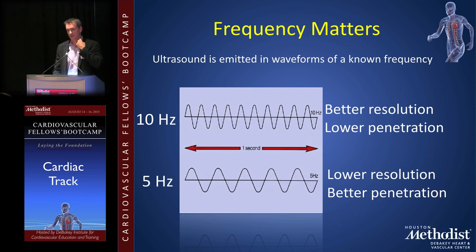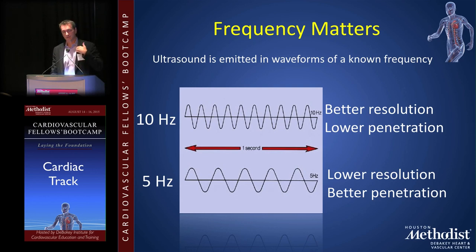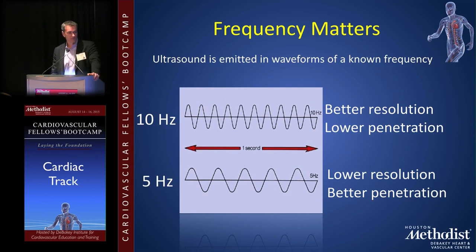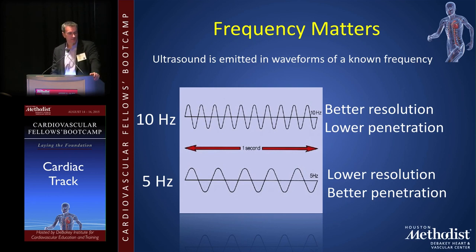If you're going to image a carotid artery, you choose a high-frequency probe because you're not going very deep. If you're imaging from the apex trying to see something at the posterior heart at 12 centimeters depth, you go low frequency. Most probes are multi-frequency, so you can dial up somewhere between 2 and 5 Hz. Whether it's a transthoracic probe or transesophageal probe, you can choose your frequency — sometimes you choose your depth and the system automatically adjusts — but frequency matters in ultrasound.